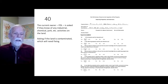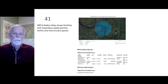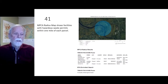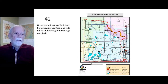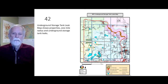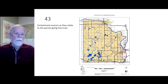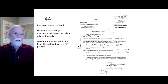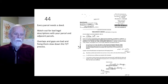The adjacent landowner interview form asks whether they know of any chemical spills on the parcel going into trust. The current owner, Fond du Lac, is asked if they know of any industrial, chemical, junk, or similar activities on the land — essentially asking if the land is contaminated and needs remediation. The MPCA radius map shows facilities with hazardous waste permits within one mile of each parcel. The underground storage tank leak map shows properties within a one-mile radius with underground storage tank leaks. Overlaps and gaps in legal descriptions are bad and fixing them slows down the fee-to-trust process.